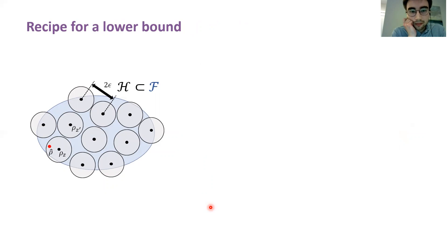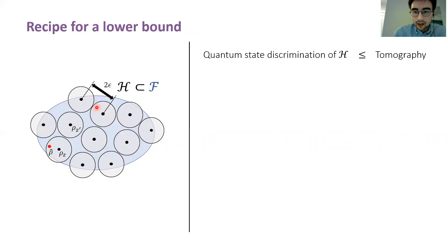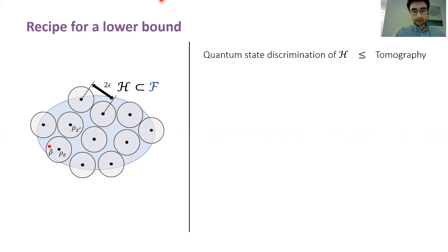Let me tell you about how we get this lower bound. Suppose that we have a family of quantum states F, and consider a finite subset H that is 2-epsilon separated in trace distance. We call such a finite subset a packing of F. The first thing to notice is that quantum state discrimination of the packing reduces to quantum tomography: if you can perform tomography to sufficient accuracy, then you can identify which state was prepared from the set of alternatives.